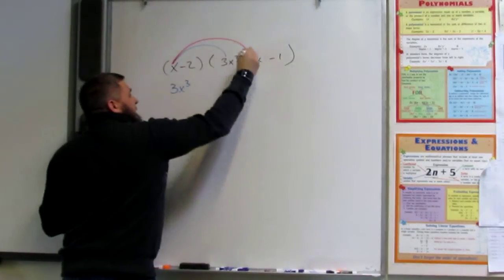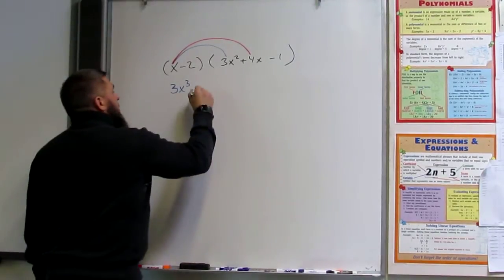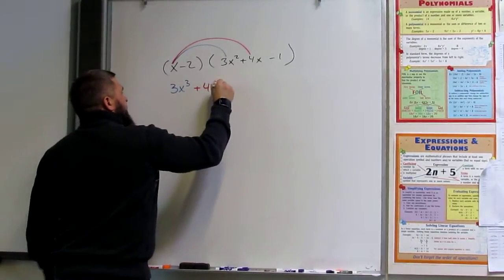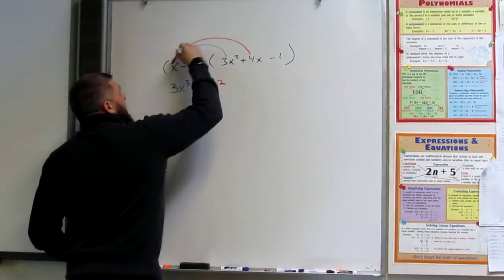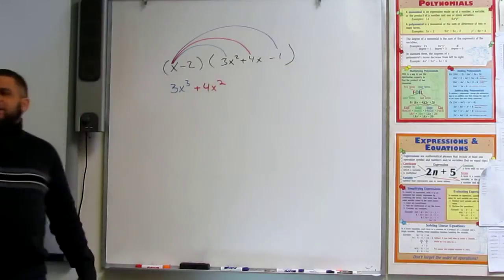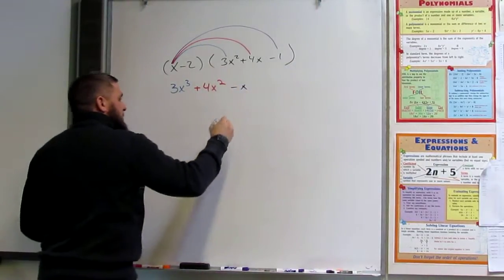x times 4x. 4x to the second? 4x to the second. Good. x times negative 1? Negative x. Negative x.